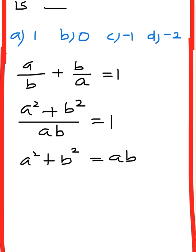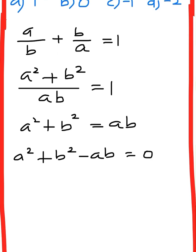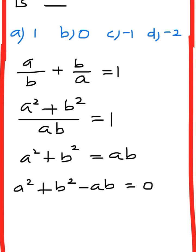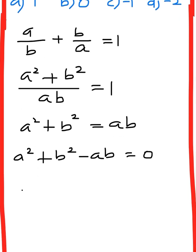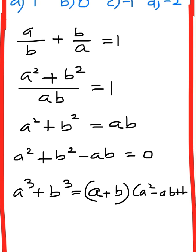Moving ab to the left side, a² + b² - ab equals 0. Okay, now a³ + b³ equals (a + b)(a² - ab + b²).